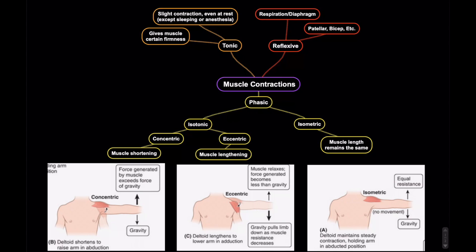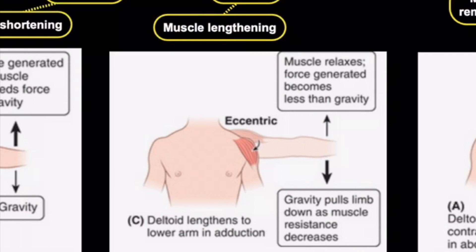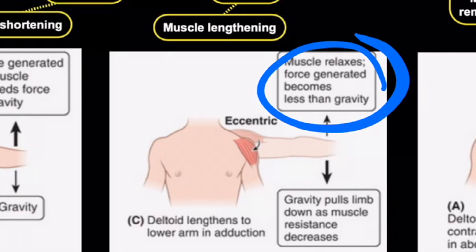Then we have the eccentric contraction, where you have a lengthening of the muscle but you still have a force being generated with the contraction. In this example, let's say you were lowering your arm — not just dropping it, but controlling it as you lower it. The force generated becomes less than gravity, but you still have a force being generated, and the muscle itself is lengthening. That's called an eccentric contraction.